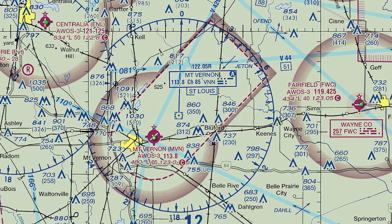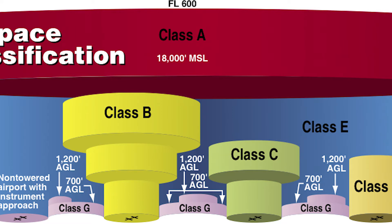Take a look back inside that faded magenta area and you'll see a dashed magenta line. This is Surface Class E airspace and it surrounds the airport. This Surface Class E airspace starts at the surface and continues up to the start of Class A airspace, or 17,999 feet.